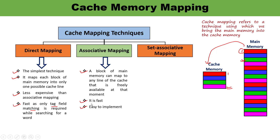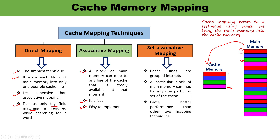The third is set associative mapping, which is relatively complex. Here cache lines are grouped into sets. As you can see, four cache lines are available and they may be grouped into two sets. A particular block of main memory can map to only that particular set of cache. But it gives better performance in comparison to the other two mapping techniques. You must watch the upcoming videos to learn in detail about each individual kind of mapping technique. Thank you so much for watching this video.